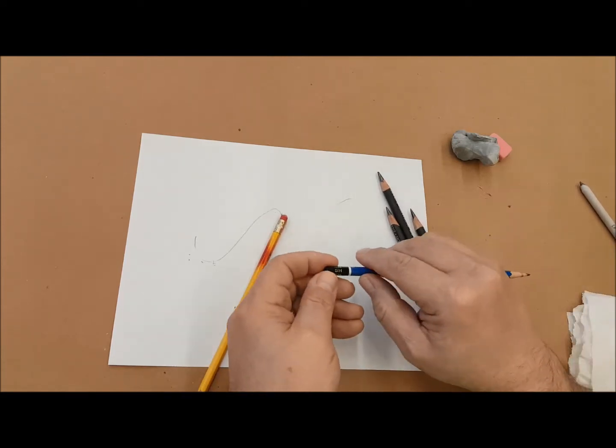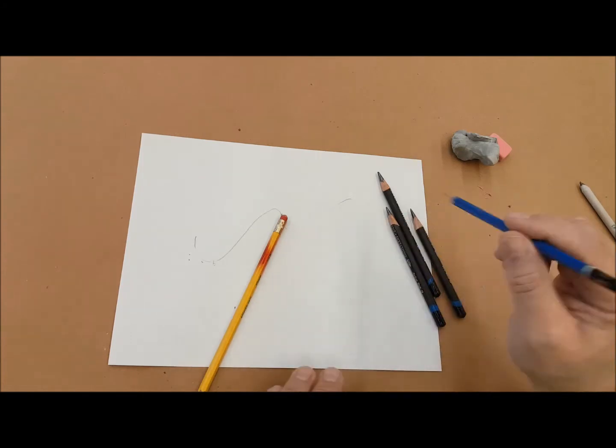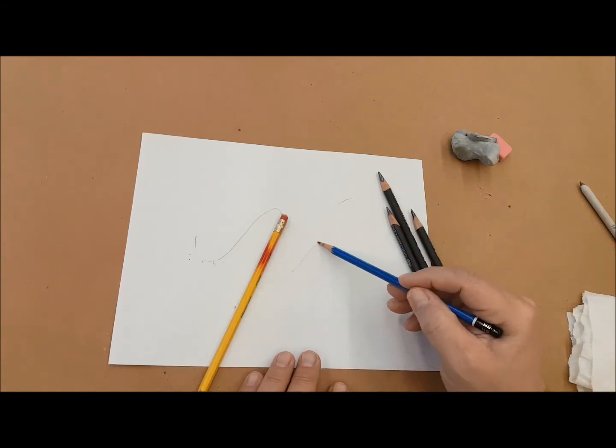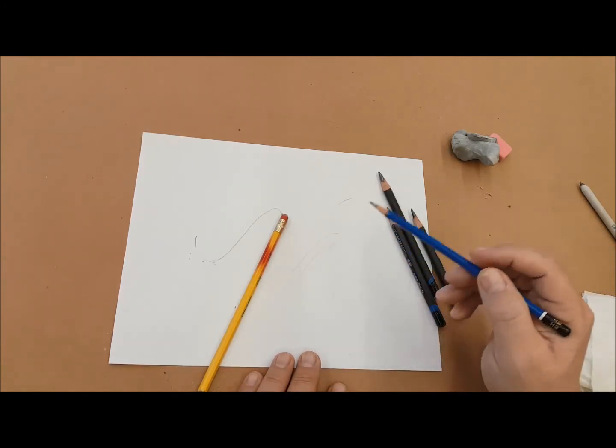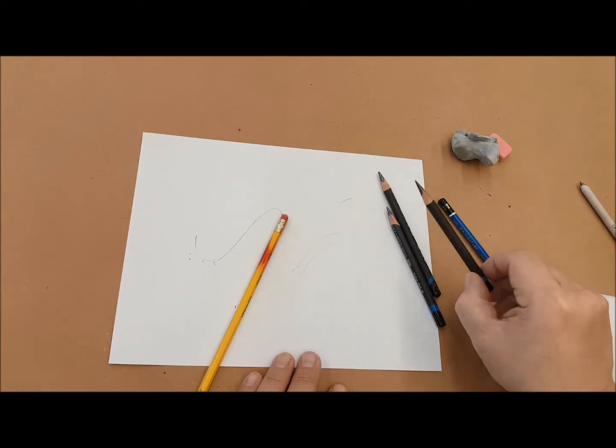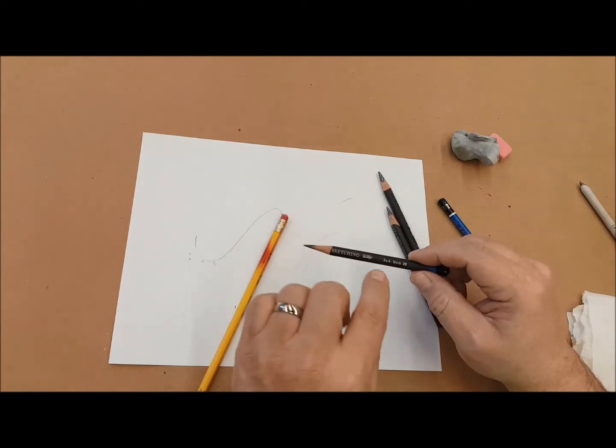So this one is 5H, so that means it has a hard lead, and because the lead is hard, when it draws lines, they tend to be light. The opposite edge of the spectrum could be like an 8B.